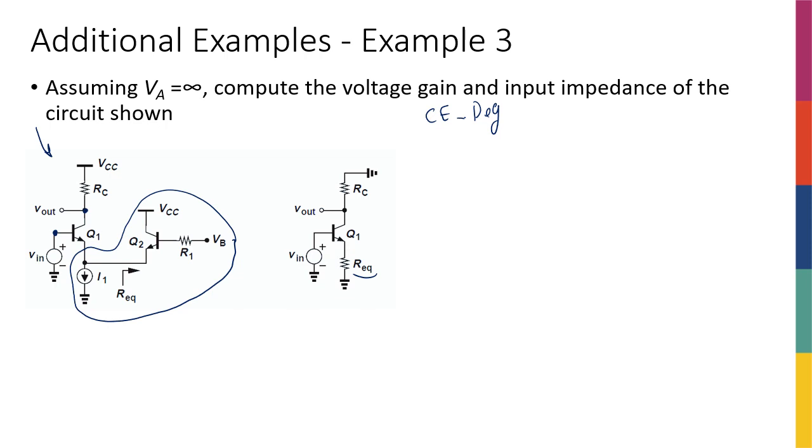So we know that from last week, we know that AV or the gain of this stage, Vout over Vin, is going to be equal to negative GM RC, negative because it's a common emitter stage, over 1 plus GM RE.